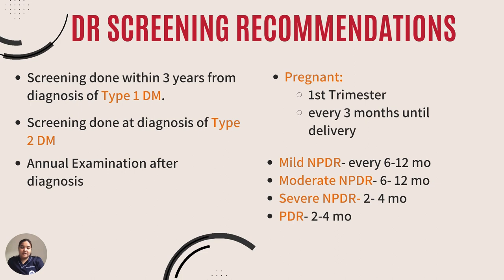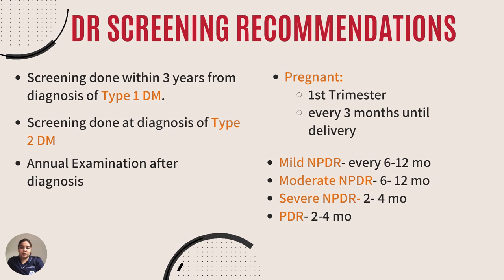For those with mild non-proliferative diabetic retinopathy, screening is done every 6 to 12 months, which is the same for those with moderate non-proliferative diabetic retinopathy. For severe non-proliferative diabetic retinopathy, screening is done every 2 to 4 months. For those with proliferative diabetic retinopathy, screening is also recommended every 2 to 4 months.